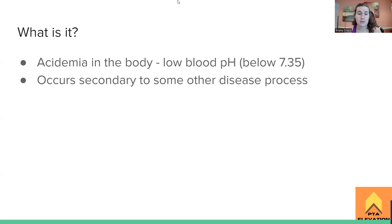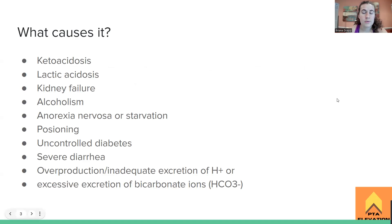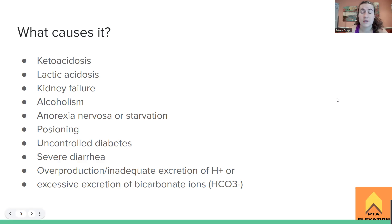Nine times out of ten it's diabetes causing problems, or any other condition that is going to decrease the pH of the blood, increasing the acidity. So what is going to cause it? Ketoacidosis, which is a complication following high blood sugar due to diabetes — usually type one or type two, though type two is more common. Lactic acidosis is just an increased amount of lactic acid in the body causing the blood to become acidic. Kidney failure, because the kidneys are super important — if they're not filtering the blood well, we could have a backup of lots of hydrogen ions and toxins, which can cause acidosis.